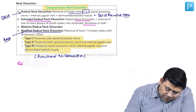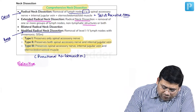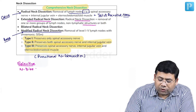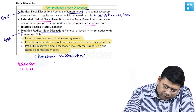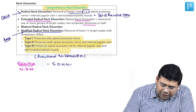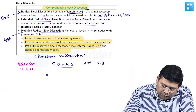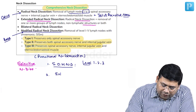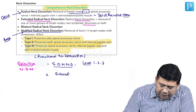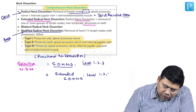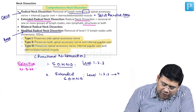We also have selective neck dissection, because not all tumors drain into all lymph nodes. The first type is supra-omohyoid neck dissection, SOHND. In SOHND, we remove levels 1, 2, and 3, and this is generally done for oral cancers. Then we have extended SOHND, where we remove levels 1, 2, 3, and also level 4.